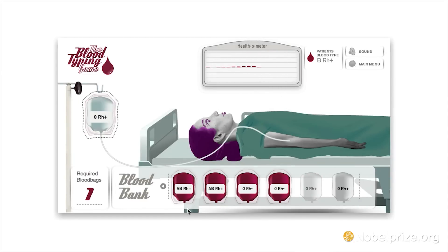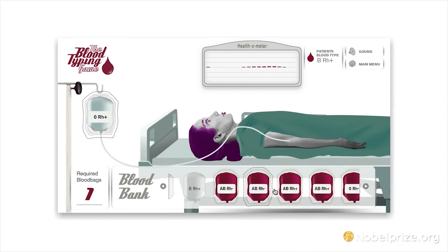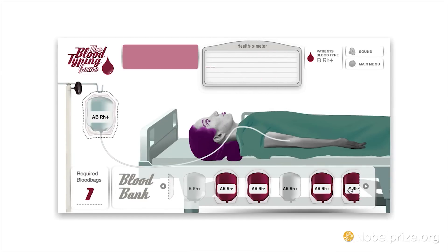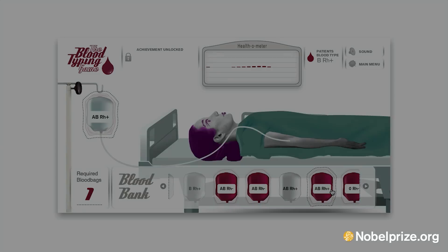If you give your patient the wrong blood type, the red blood cells from the donated blood will clump, which can have fatal consequences for the patient.